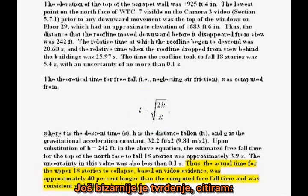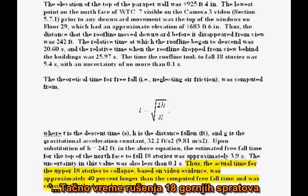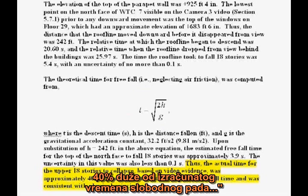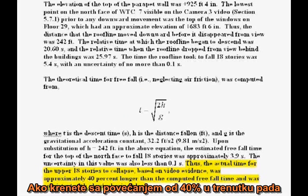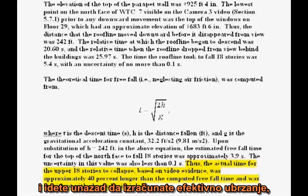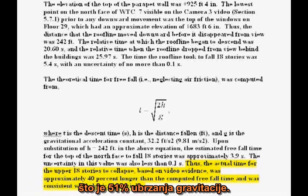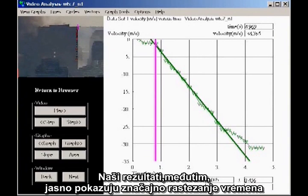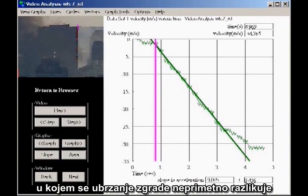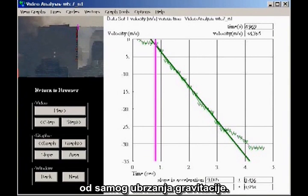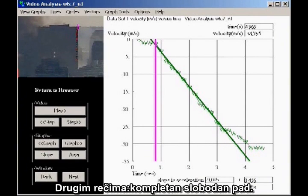More bizarre is the claim that, quote, 'the actual time for the upper 18 stories to collapse, based on video evidence, was approximately 40% longer than the computed freefall time.' If you start with a 40% increase in the time of fall and work backwards to compute the effective acceleration, their claim is equivalent to saying the acceleration of the building is only 5 meters per second squared, which is 51% the acceleration of gravity. Our results, however, clearly show a significant stretch of time in which the acceleration of the building is indistinguishable from the acceleration of gravity itself — in other words, complete freefall.